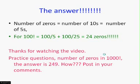Thanks for watching this video. In a similar fashion, try to count the number of zeros that you find in 1000 factorial. The answer is 249. I want you to see how this happens. Thanks for watching and post your comments with your answers.